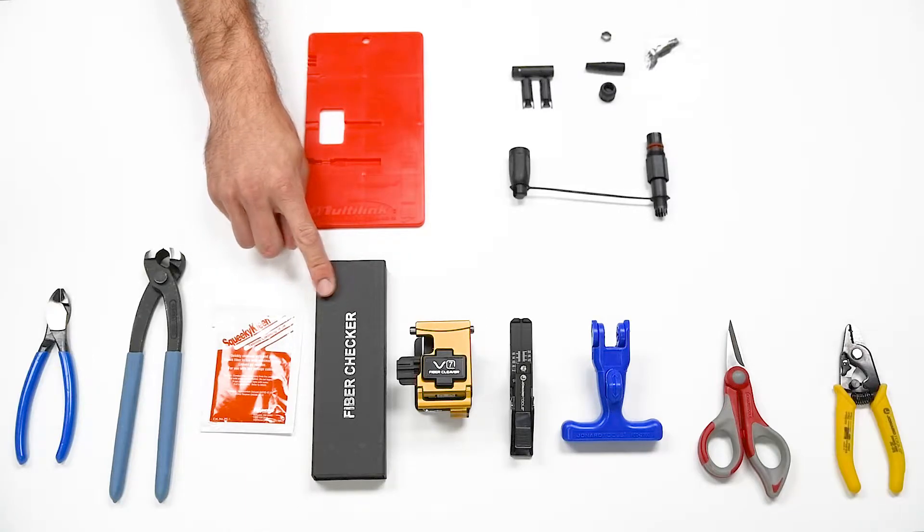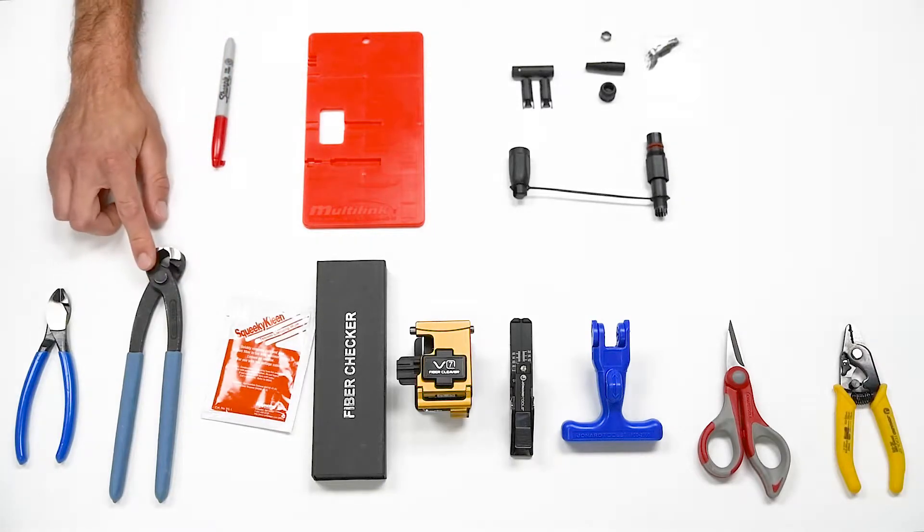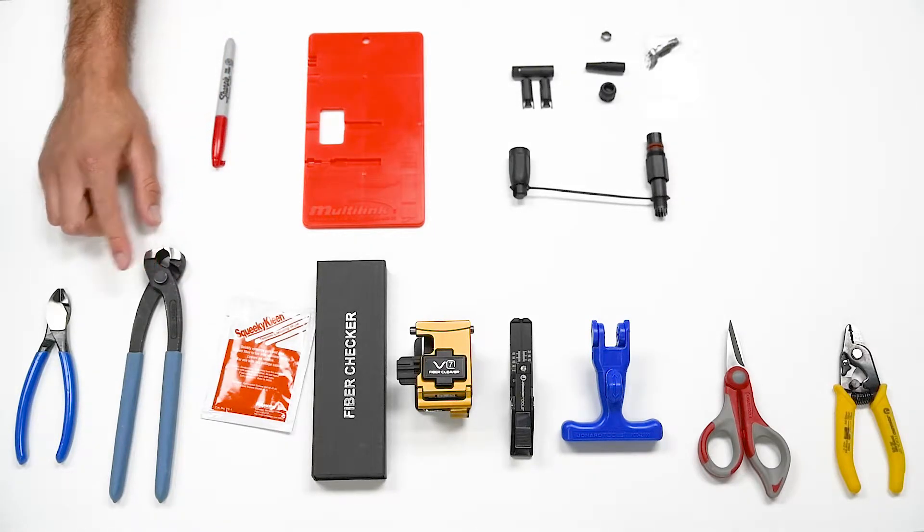A visual fault locator, and always when working with fiber, fiber wipes. Sometimes you will need to use a crimp tool or pliers.